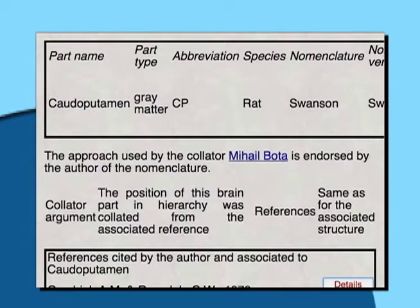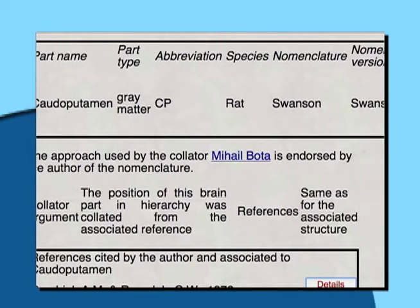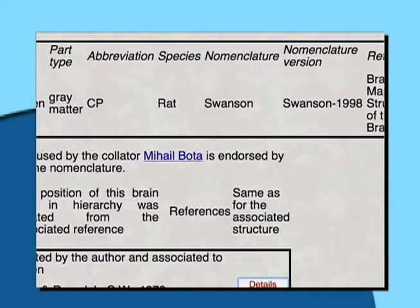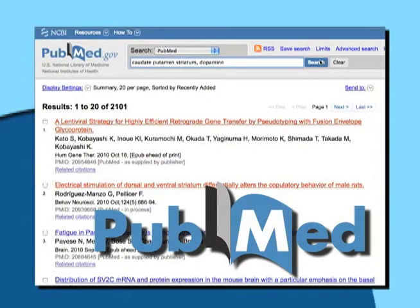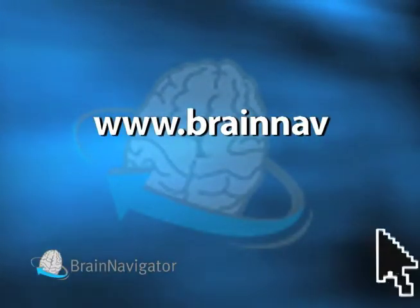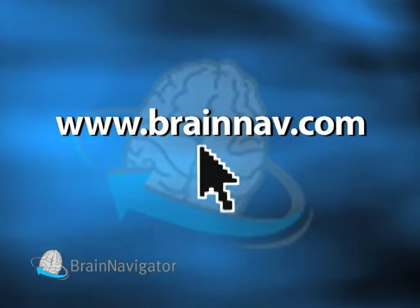The species this information has been compiled from, who has standardized the nomenclature for this area, and links to published papers in PubMed. You could spend days sifting through papers to find the same information BAMS provides in just a few seconds using Brain Navigator.